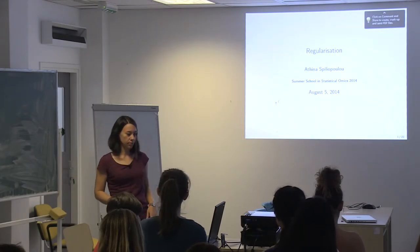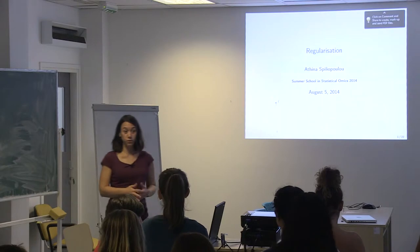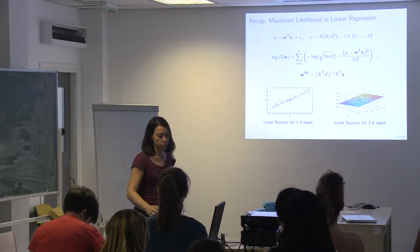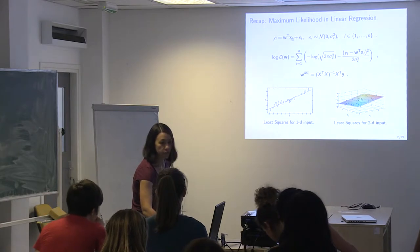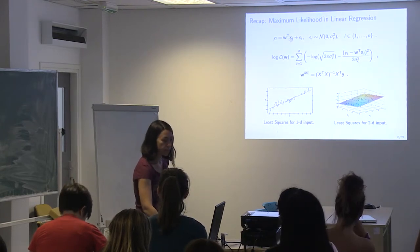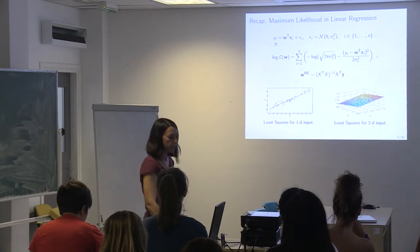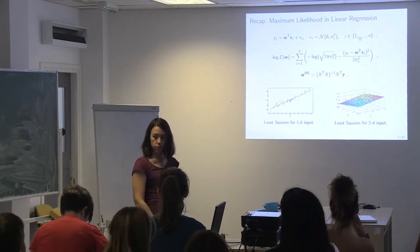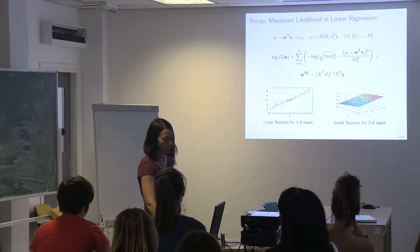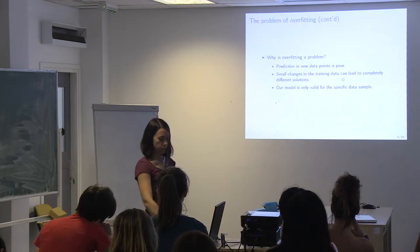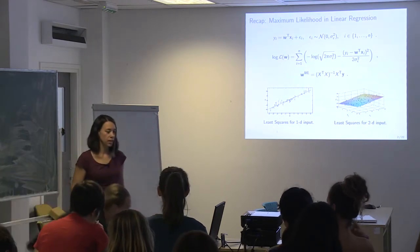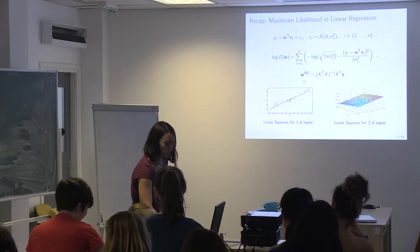Today we're going to talk about regularization, starting from where we left off yesterday. At the end of yesterday we had the solution of linear regression — the maximum likelihood solution. We have our model written as a vector, where W are the parameters, X is our inputs, Y is the label we want to predict, and we have Gaussian noise. We have a number of observations, we can write the log likelihood of the data, and we end up with this solution for our parameters.